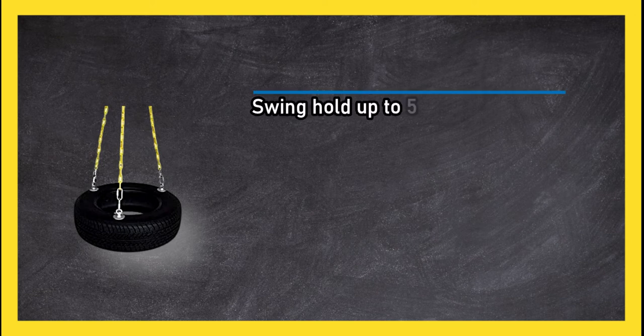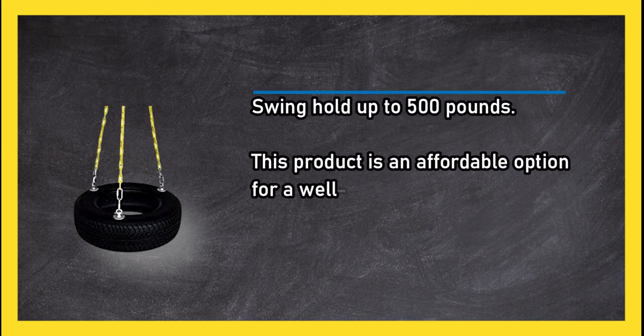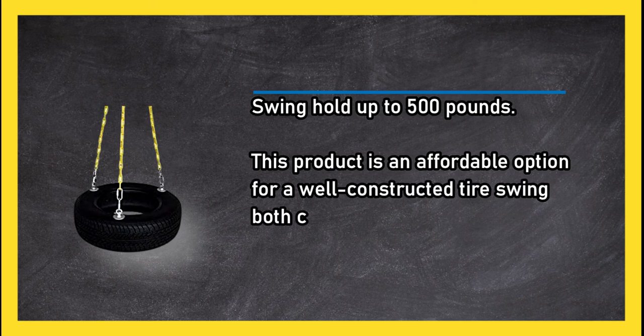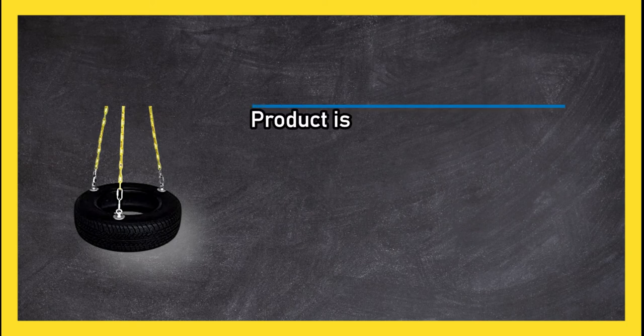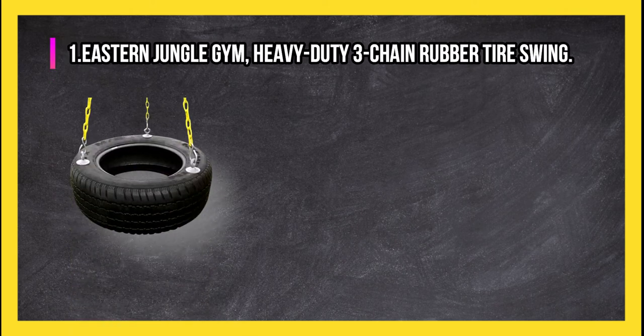Swing holds up to 500 pounds. This product is an affordable option for a well-constructed tire swing both children and adults can enjoy. Product is on the smaller side. At number one: Eastern Jungle Gym heavy-duty 3-chain rubber tire swing.